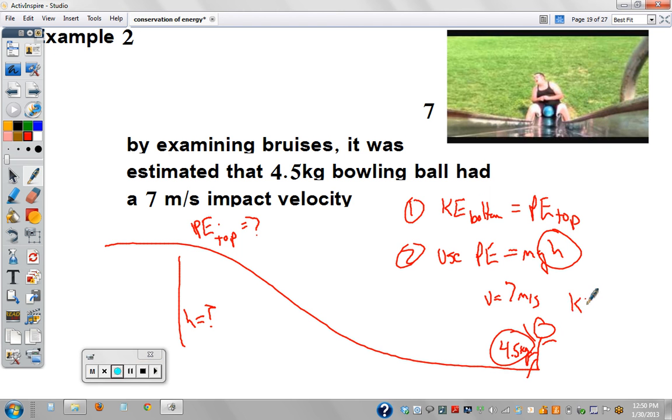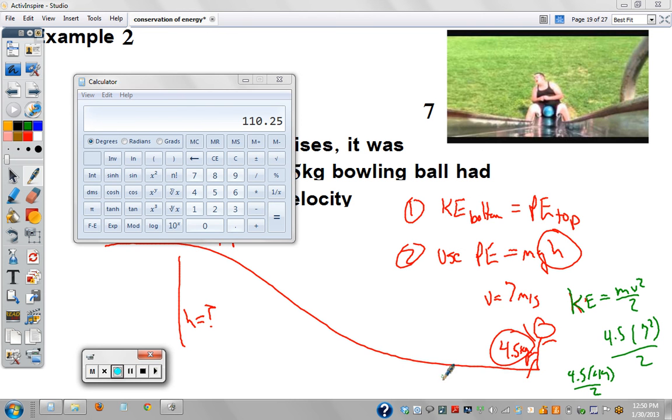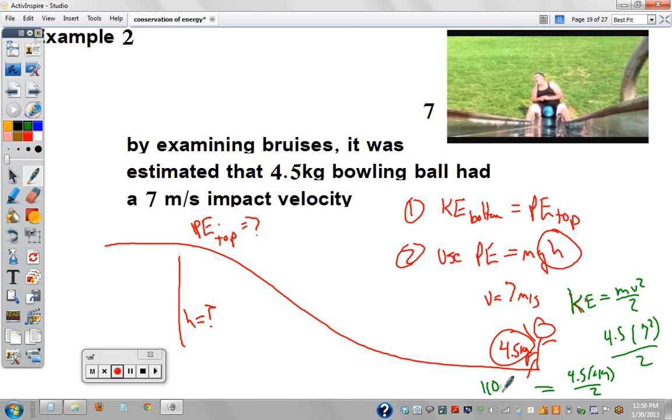So first thing, kinetic energy: mv squared over 2. 4.5 times 7 squared over 2, 4.5 times 49 over 2 equals 110.25. That's your kinetic energy. And the relationship between the two: 110.25 equals potential energy at the top.